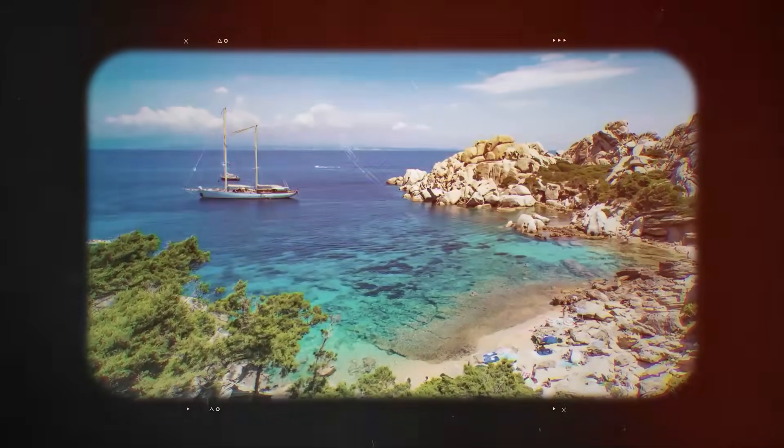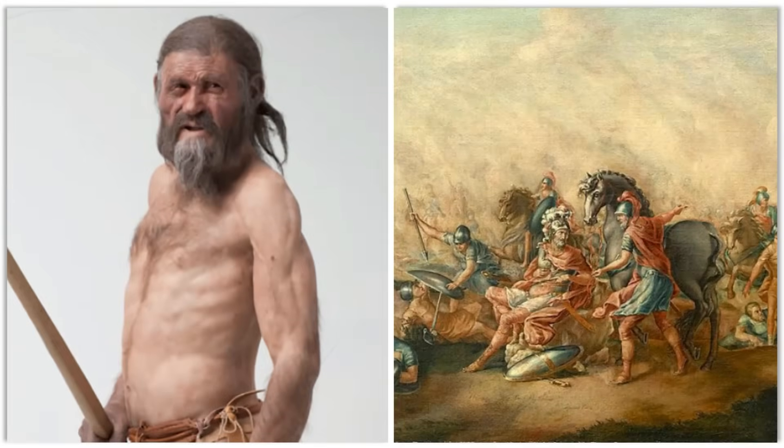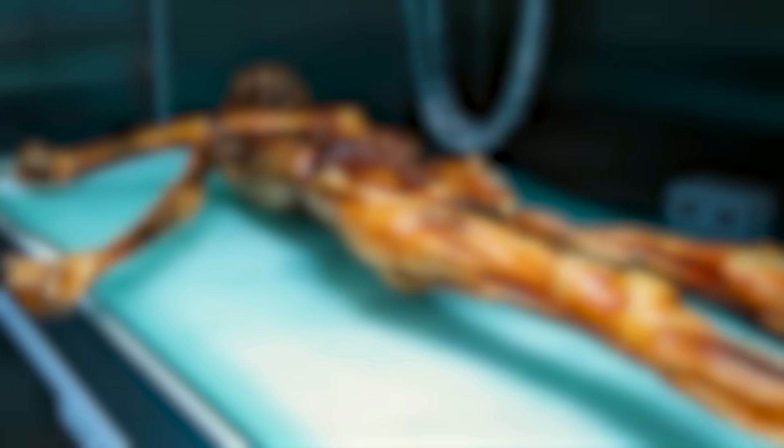But if his people vanished, did any trace of them survive? The answer is yes, and it's in a place you would never guess. Ötzi's closest living genetic relatives aren't in the Alps. They live hundreds of miles away on the Mediterranean island of Sardinia. Like Ötzi's ancestors, the people of Sardinia remained isolated for millennia, preserving an ancient genetic signature that has disappeared almost everywhere else on the mainland.